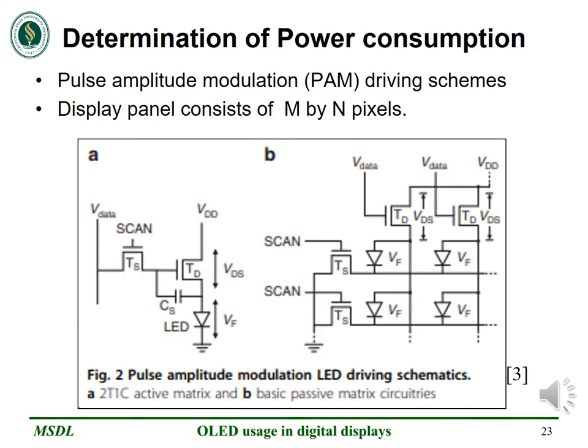Pulse amplitude modulation, PAM, which is also called analog driving, is commonly used in emissive organic LED displays for micro-LED drivers. It can be used to address both active matrix and passive matrix. In Figure 2A, a storage capacitance CS holds the voltage so that the transistor is kept open for the remainder of the frame time. Therefore, in active matrix addressing, the LED emits light for the whole frame time. In Figure 2B, which illustrates the passive matrix circuitry, no storage capacitance is employed. Hence, each LED only emits light for a short period of time.